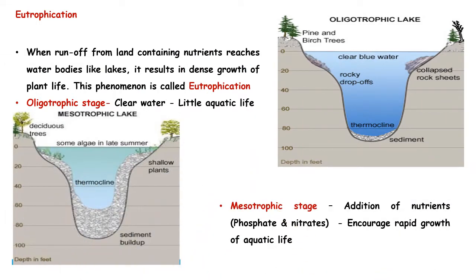During rainy season, whatever nutrients are available in the soil as well as from rocks get washed off and finally reach the aquatic environment such as lakes and ponds, supporting the growth of algae and different organisms. This is a natural process. But in eutrophication, the same process occurs — when runoff from land containing nutrients reaches water bodies like lakes, it results in dense growth of plant life. This phenomenon is called eutrophication.